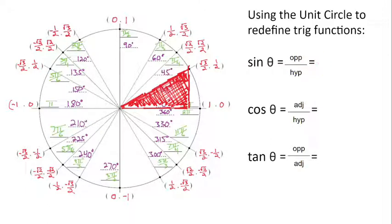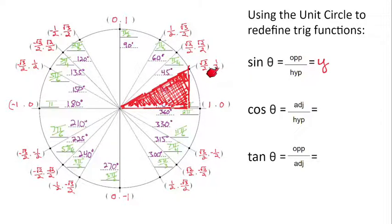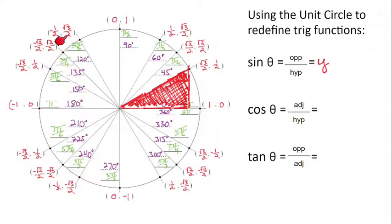To evaluate the sine trig function for any of these common angles, all you have to do is look at the y-coordinate of that angle. So the sine of 45 degrees is √2/2, the sine of 120 degrees is √3/2, and so on.